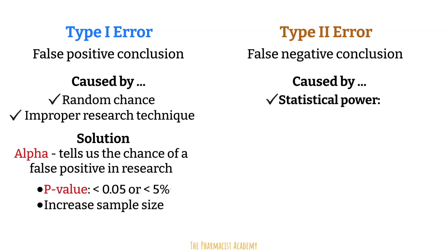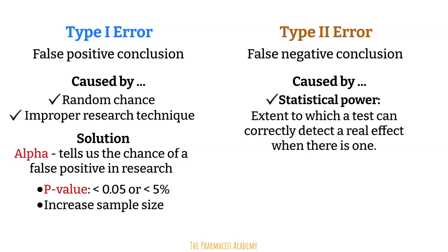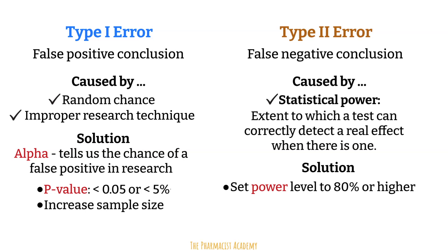Type 2 error could be due to statistical power. Power is the extent to which a test can correctly detect a real effect when there is one. If the study is powered to detect a true effect or difference, then you will be less likely to conclude that there was no difference — when in reality, you just didn't power your study enough to detect that difference. A power level of 80% or higher is usually considered acceptable. The risk of a type 2 error is inversely related to the statistical power of a study: the higher the statistical power, the lower the probability of making a type 2 error.